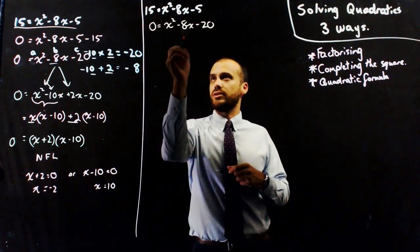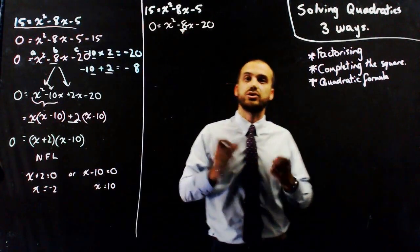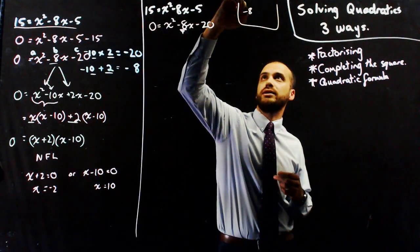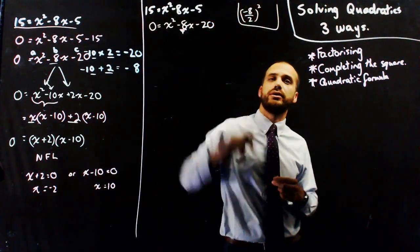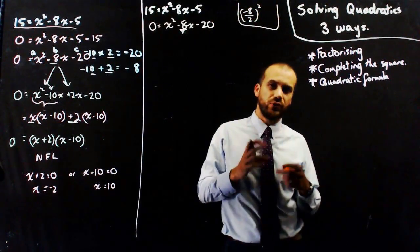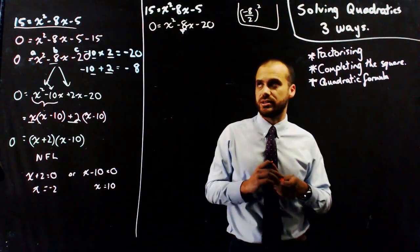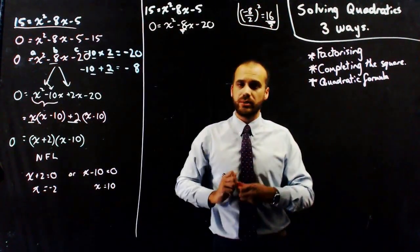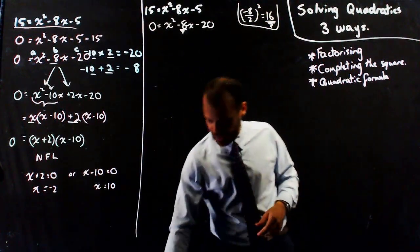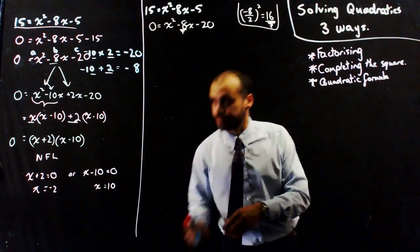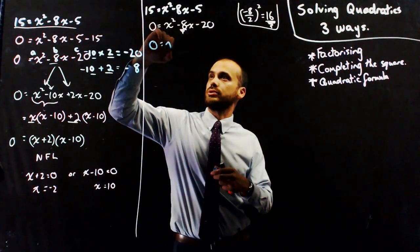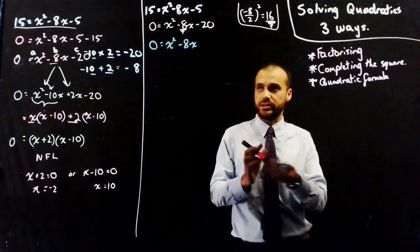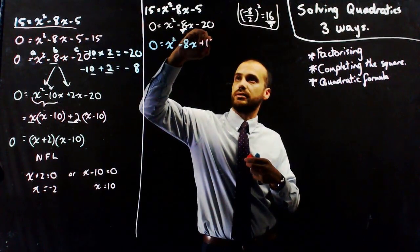First step: halve the B value, and then square it. So negative 8 divided by 2, then square it. Negative 8 divided by 2 is negative 4. Negative 4 squared is positive 16 — that number is important. Now what I'm going to do is add and subtract that number in a very specific way. 0 equals x squared minus 8x, and this is where I'm going to add 16 and subtract 16.